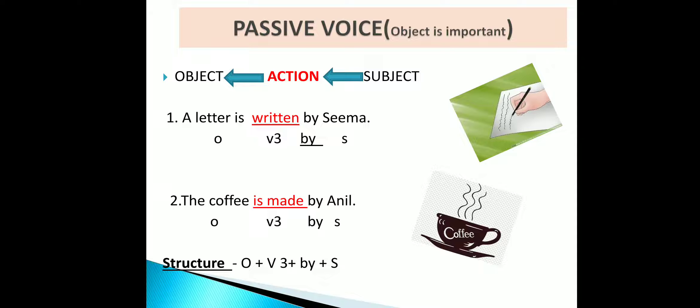The structure of passive voice is: object + verb (third form / past participle) + by + subject.